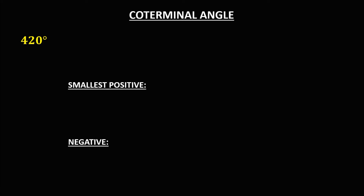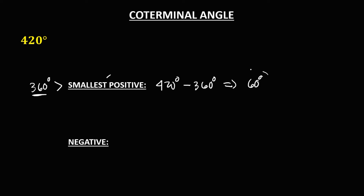For the next given angle, to find the smallest positive coterminal angle — these are angles less than 360 degrees — since this is 420 degrees, we subtract 360 degrees. So the smallest positive coterminal angle is 60 degrees.